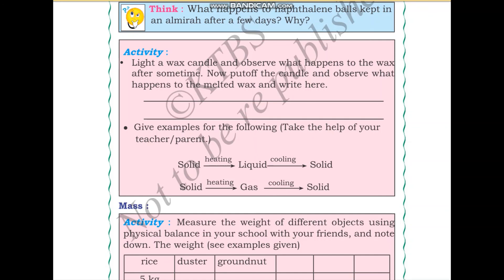On heating — when the flame is on — the candle melts. Then on putting off the flame, the wax solidifies again.